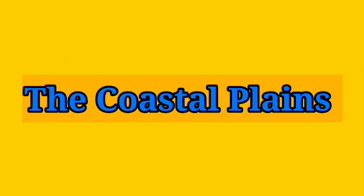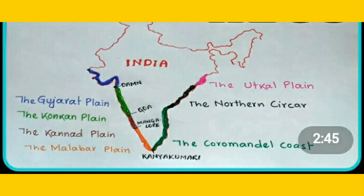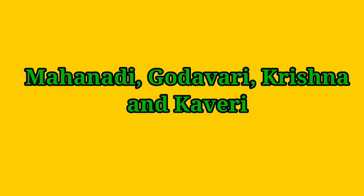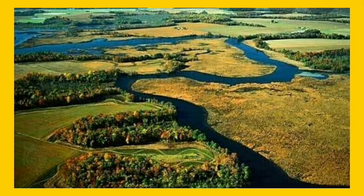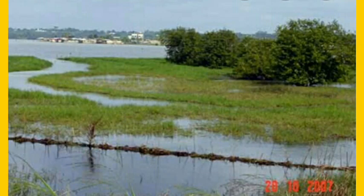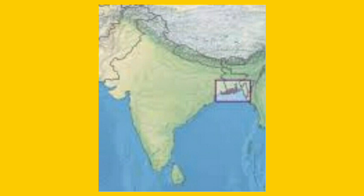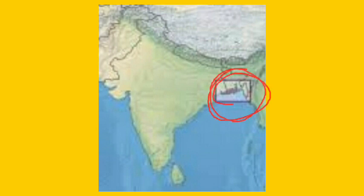The next feature is the Coastal Plains. To the west of the Western Ghats and to the east of the Eastern Ghats lie the coastal plains. The western coastal plains are very narrow while the eastern coastal plains are much broader. There are a number of east-flowing rivers — the Mahanadi, Godavari, Krishna and Kaveri — which drain into the Bay of Bengal, forming fertile deltas at their mouths. The Ganga and Brahmaputra form the world's largest delta, known as the Sundarbans delta, where they flow into the Bay of Bengal. The delta is triangular in shape and is an area of land formed at the mouth of the river.